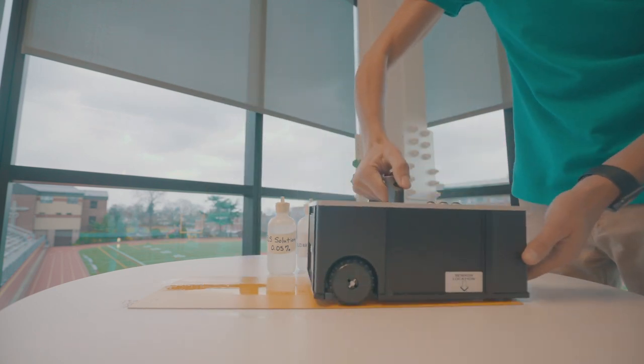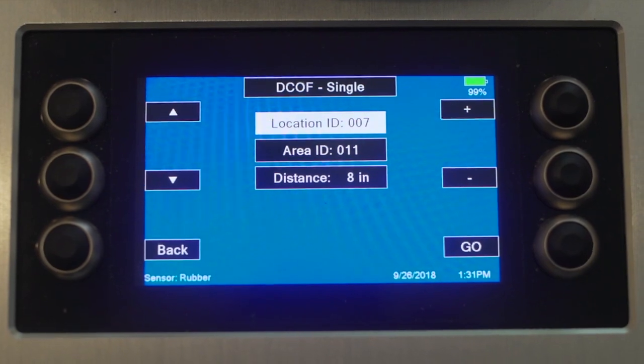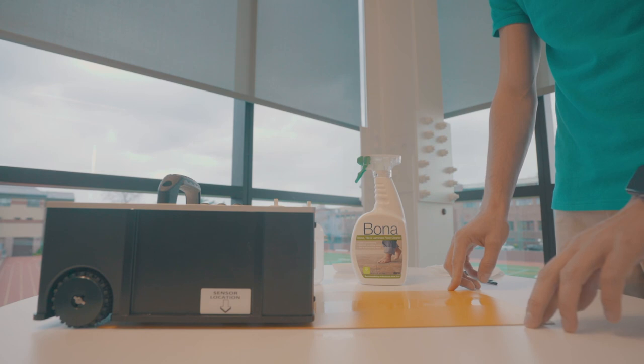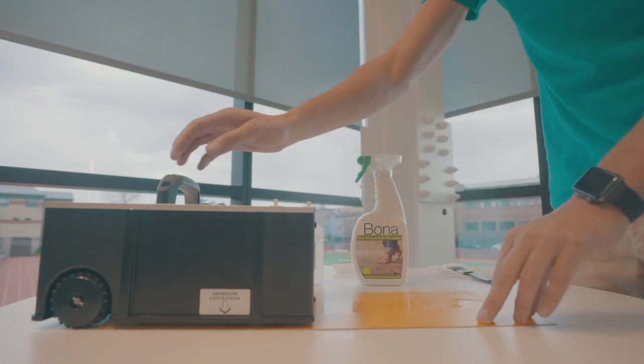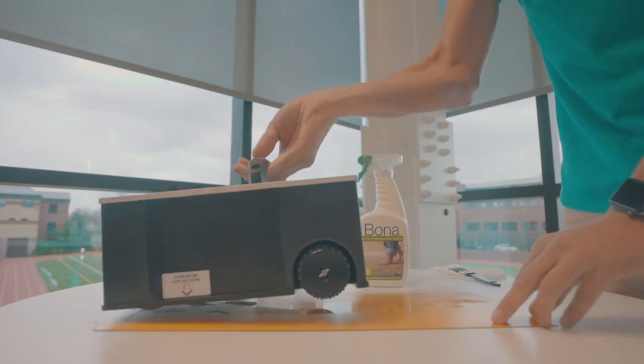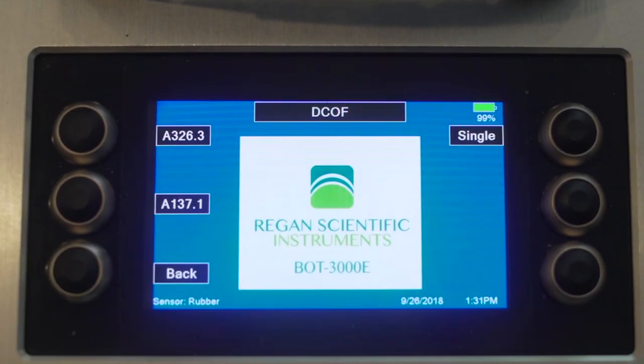After you place your BOT on the surface, select Single Run and press Go. Record the DCOF result, then turn your BOT 180 degrees and take a second measurement from the same surface in the opposite direction.